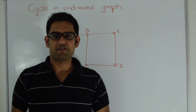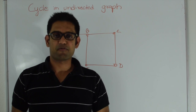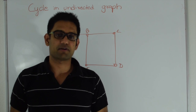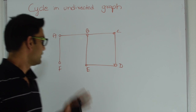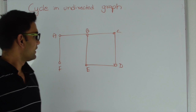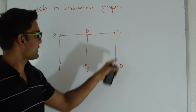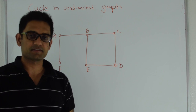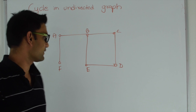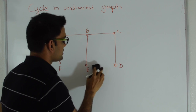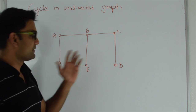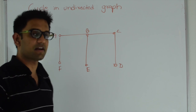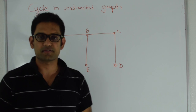Hello friends, my name is Tushar and today I'm going to talk about how to find a cycle in an undirected graph. Here I have a graph and this graph contains a cycle, so this graph should say that yes it contains a cycle. If I remove this edge, then this graph doesn't contain a cycle anymore, so it should say that it does not contain a cycle.